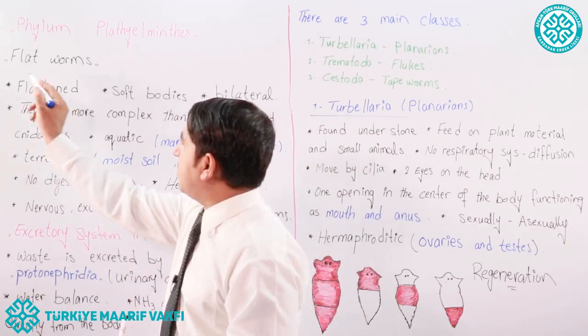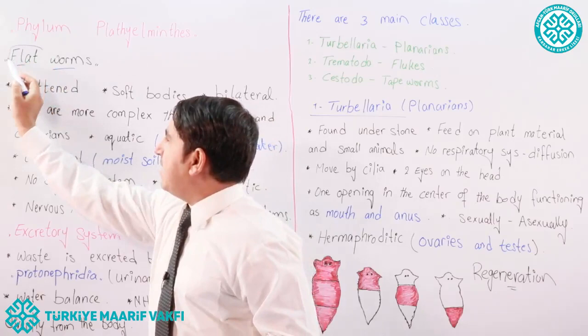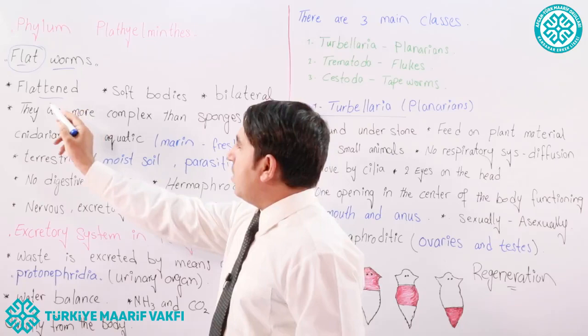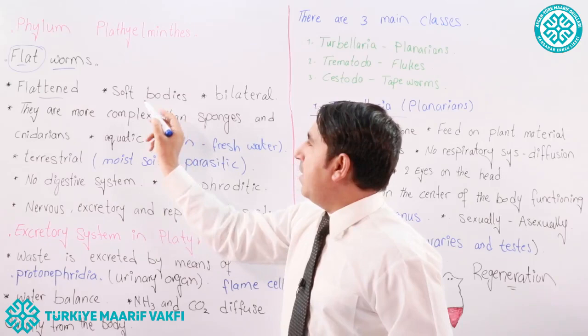Platyhelminthes means flatworms — which type of worms? Flat. Their structure is flattened, so we can say they are flattened. These are the characteristics of Platyhelminthes. The first characteristic: they have a flat body shape and they have soft bodies.